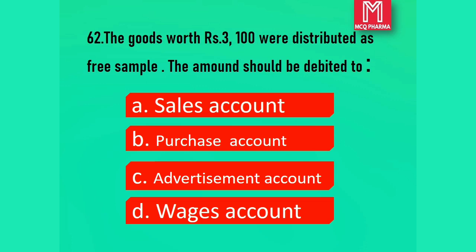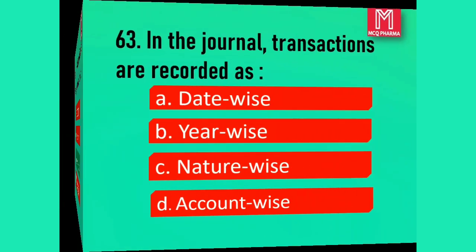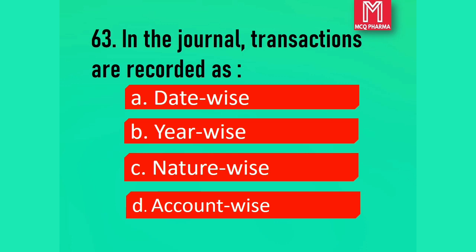Question number 62. Goods worth Rs. 300 were distributed as free samples. The amount should be debited to: Option A, Sales account. Option B, Purchase account. Option C, Advertisement account. Option D, Wages account. Correct answer: Option C, Advertisement account. Question number 63. In the journal, transactions are recorded as: Option A, Date wise. Option B, Year wise. Option C, Nature wise. Option D, Account wise. Correct answer: Option A, Date wise.